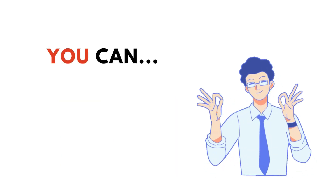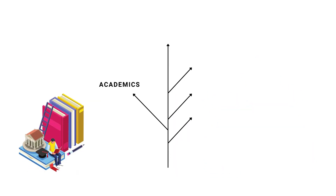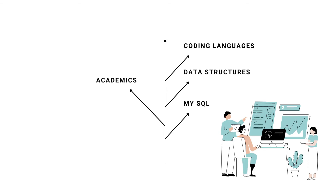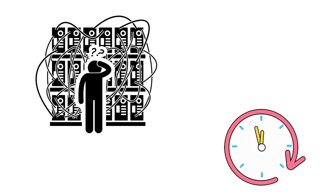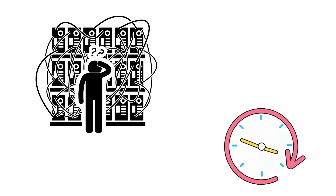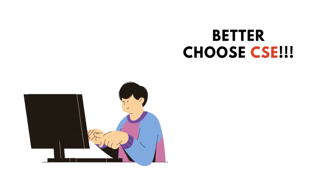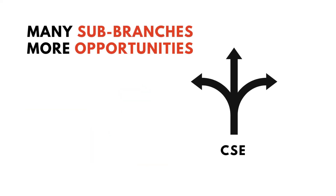There is also a good academic side — hard subjects, coding languages, data structures, and SQL are part of the curriculum. Even in interviews, these things are not too complicated. If you want a software job, you can definitely choose CSE, and if you don't get a sub-branch in CSE, you will still have many seats.